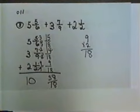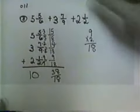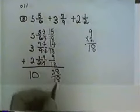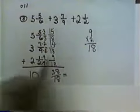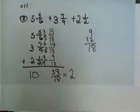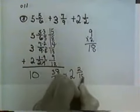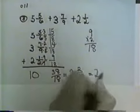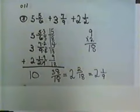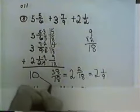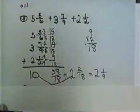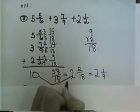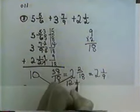Now again, we can't leave that 38 eighteenths. We can reduce it first or divide it out either way. 38 eighteenths is not reduced, so we would have to work on it some. I think this time, since I know I can't leave a mixed number, I'm just going to go ahead and divide it out. Now, 18 to 38, it would go 2 times and leave me with 2 eighteenths left, and that would be the same thing as 2 and 1 ninth.